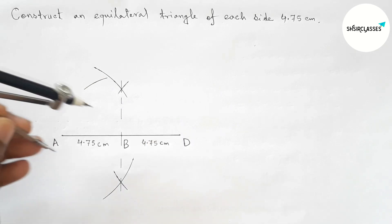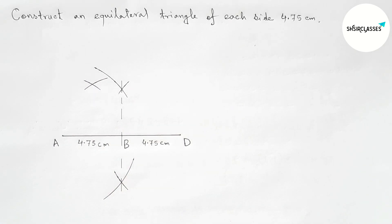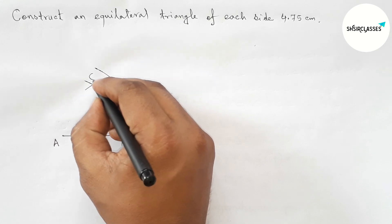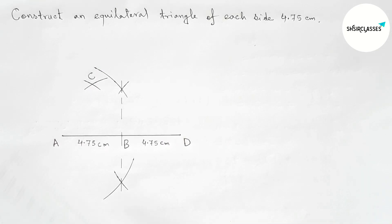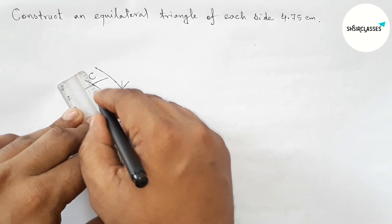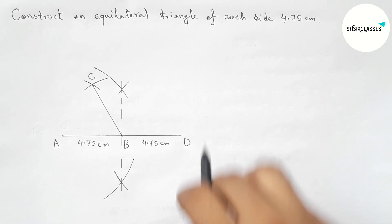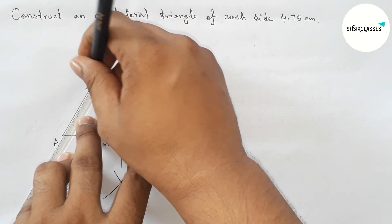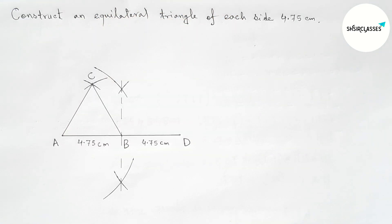Now putting the compass on point B and drawing an arc here. Again with same length, putting the compass on point A and cut here. So here both the arcs meet at point C. Now joining BC first, then joining the side AC to complete our required equilateral triangle.